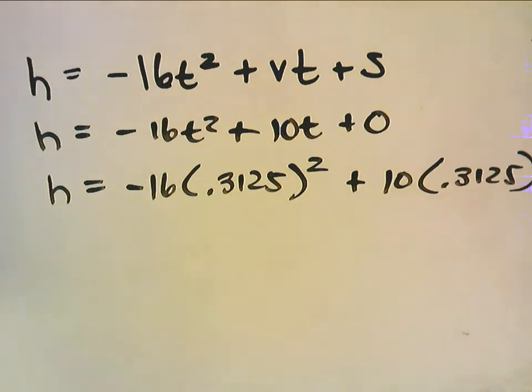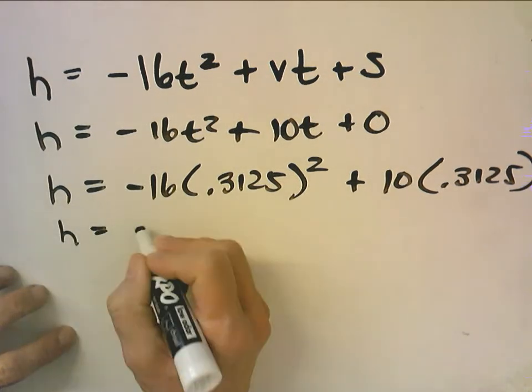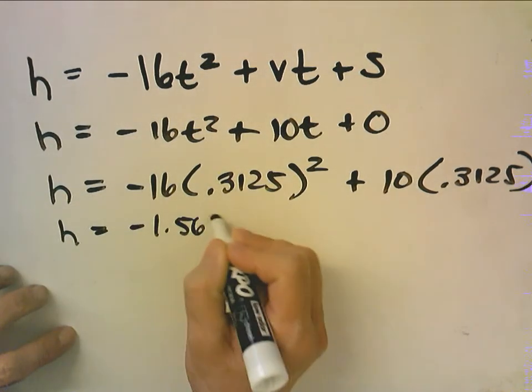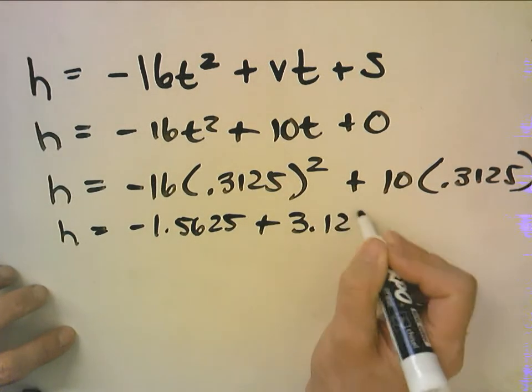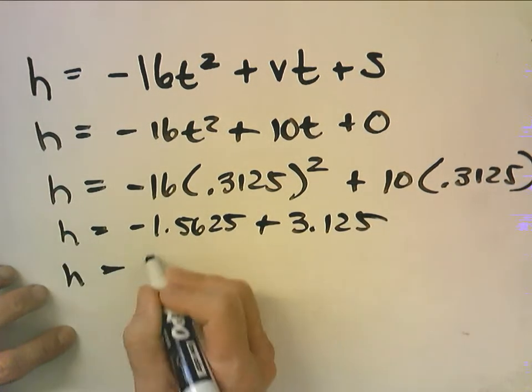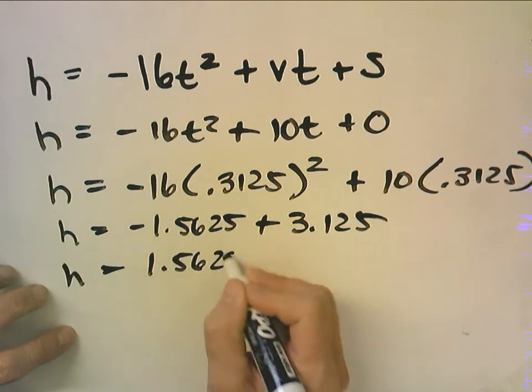Now that ends up being h equals negative 1.5625 plus 3.125 and that ends up being 1.5625 feet.